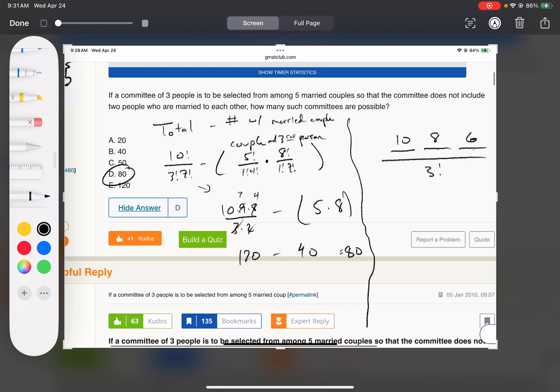Okay, so 3 factorial is 6, that cancels nicely, and 8 times 10 gives you 80, likewise.